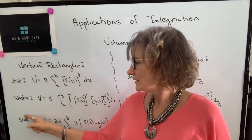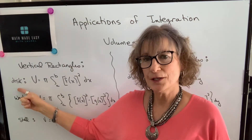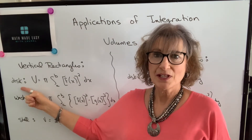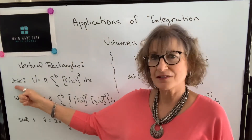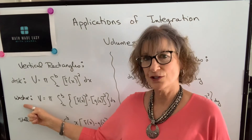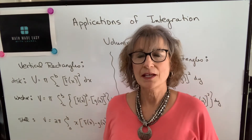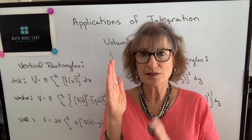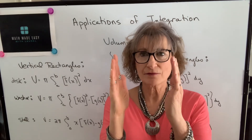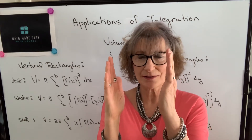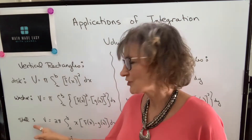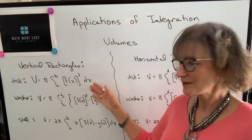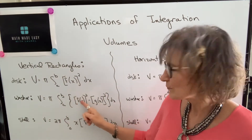Whether to use disc or washer is determined by whether the area is bounded by the x-axis or not. If it's bounded by the x-axis it's a disc; if not, you're using a washer. If your vertical rectangle is parallel to the axis of rotation — in other words the y-axis — then you're using the shell method. Notice that in all of them, everything is in terms of x, the limits as well as the functions.